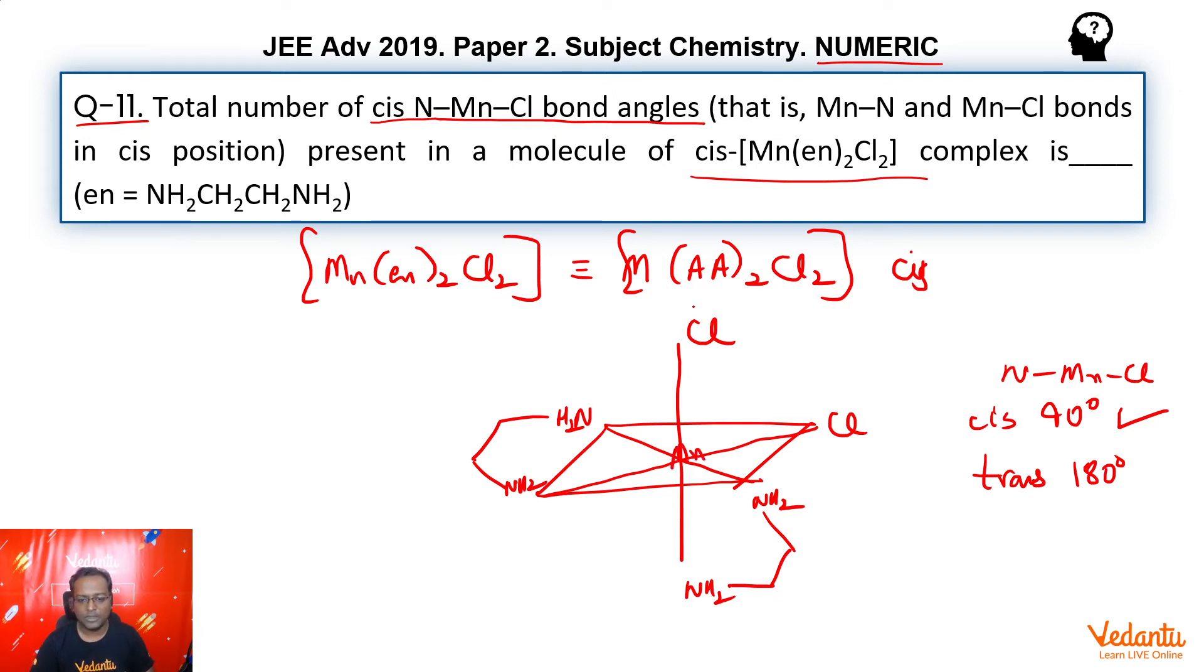As you can see, this Cl makes how many 90 degree bonds with nitrogen? One here, the other here, and the other here. So it makes 3.